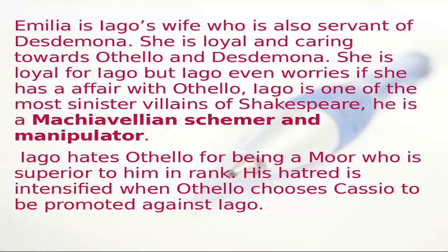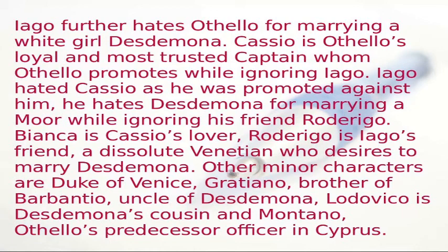Iago hates Othello for being a Moor who is superior to him in rank, and his hatred is intensified when Othello promotes Casio over Iago. He further hates Othello for marrying a white girl, Desdemona. Casio is Othello's loyal and most trusted captain. Bianca is Casio's lover. Rodrigo is Iago's friend, a dissolute Venetian who desires to marry Desdemona. Minor characters include the Duke of Venice, Gratiano (brother of Barbanteo and uncle of Desdemona), Lodovico (Desdemona's cousin), and Montano (Othello's predecessor officer in Cyprus).